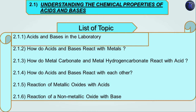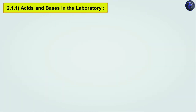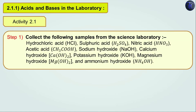We will learn this topic with the help of two activities: Activity 2.1 and Activity 2.2. In this video lecture I will cover Activity 2.1, and in the next video lecture you will see Activity 2.2. So let's start. Acids and bases in the laboratory — with the help of this activity we will see how indicators react with acids and bases.